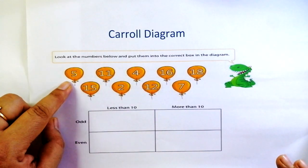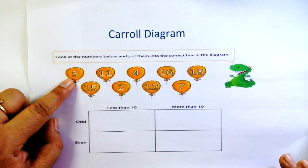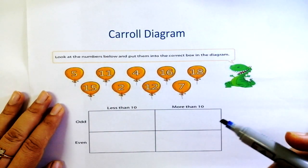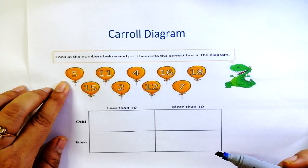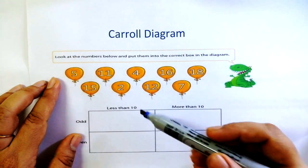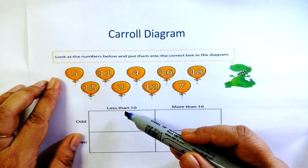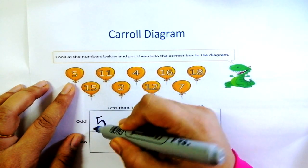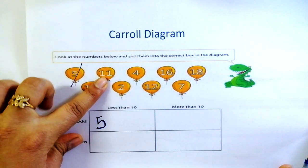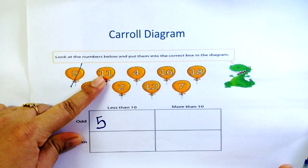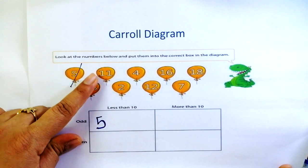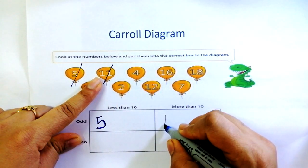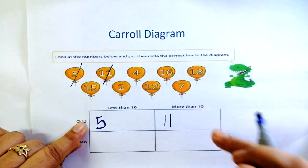Let's start with the first number which is 5. We check whether it is odd or even and focus on one attribute, then go to the next one. 5 is an odd number, and then we check the second criteria — less than 10 or more than 10. 5 is less than 10, so I'm going to put 5 here. The next number is 11 — it's an odd number but it is more than 10, so I'm going to write it in the box for odd and more than 10.